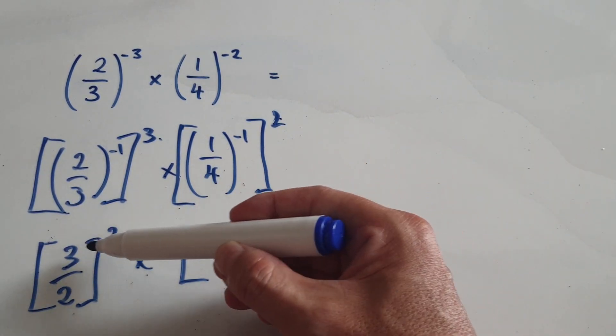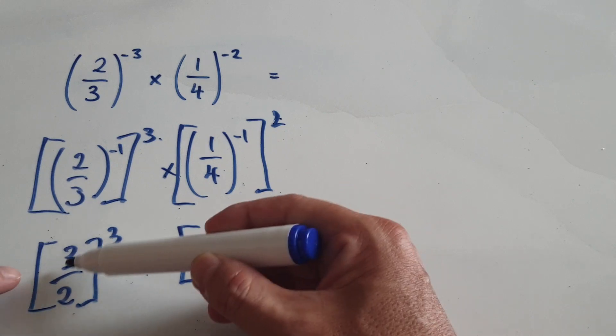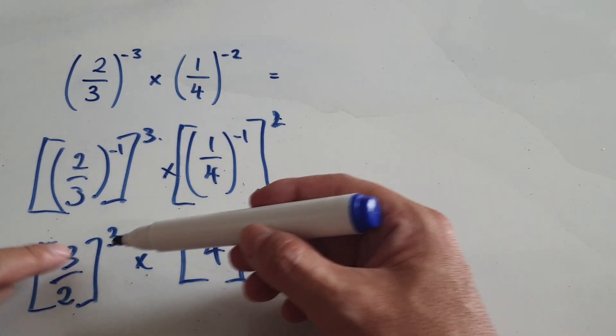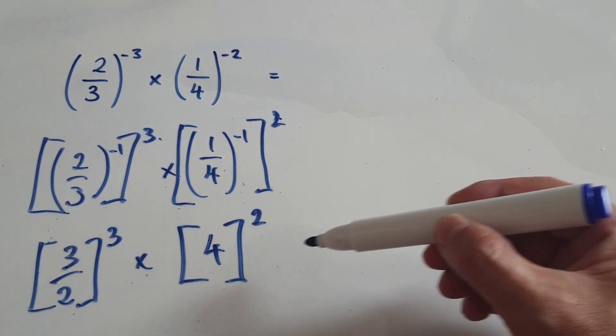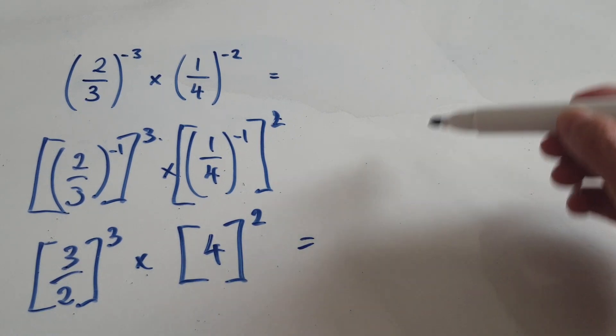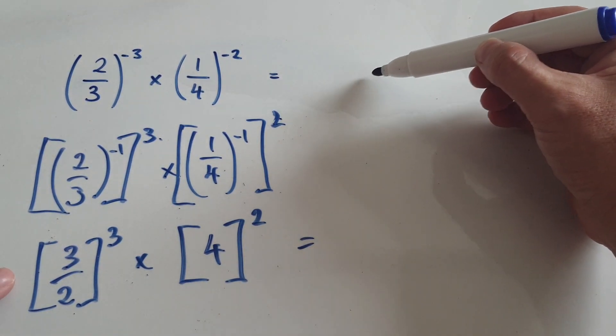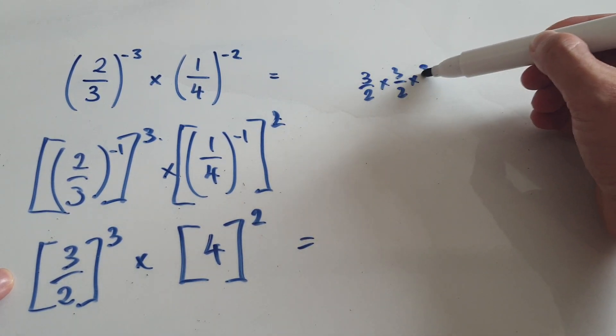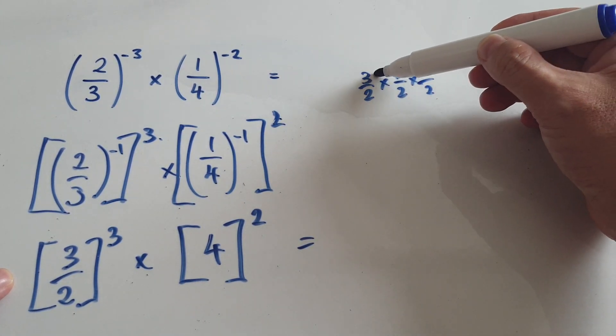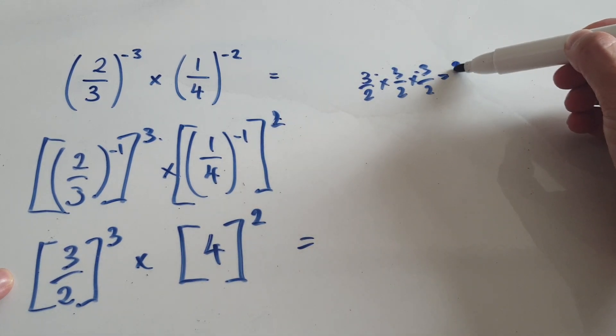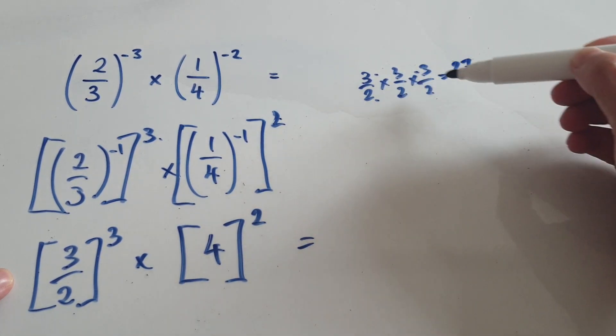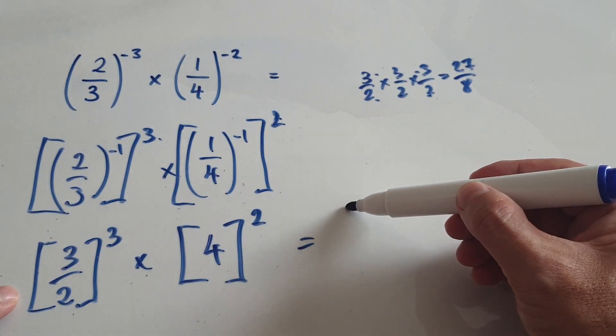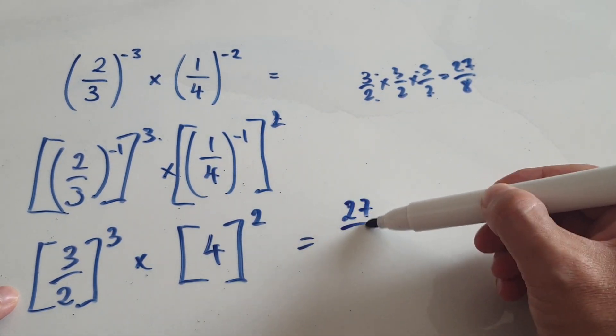Okay, so now a fraction times by itself 3 times. So in your mind, visualize it as this. 3 over 2 times by itself 3 times. So that would be top times top times top. That would be 27. Bottom times bottom times bottom. That would be 8. So this thing here would be 27 over 8.